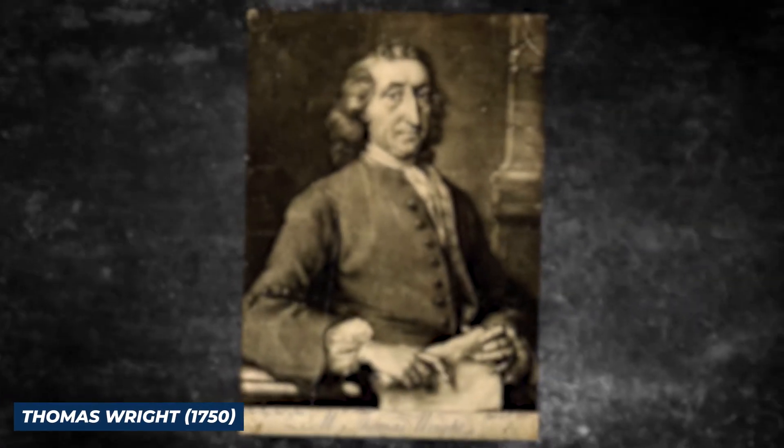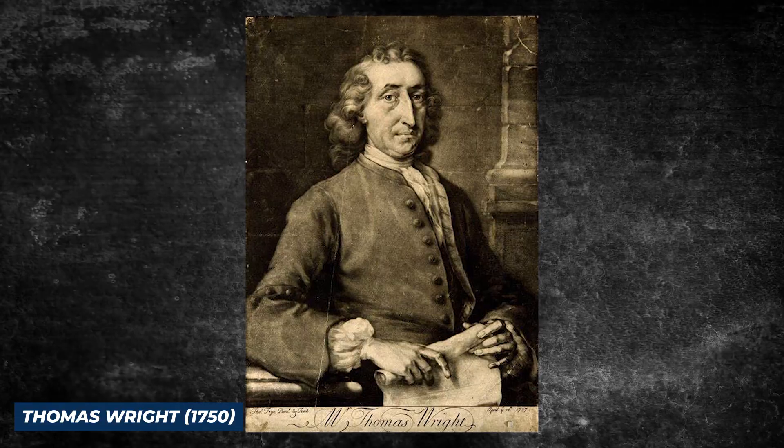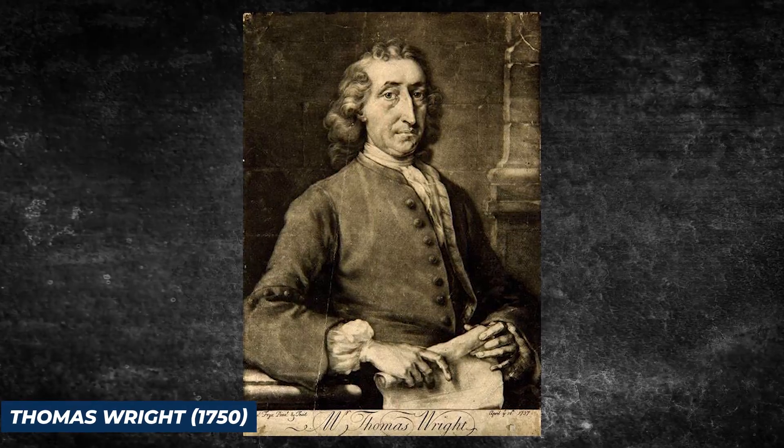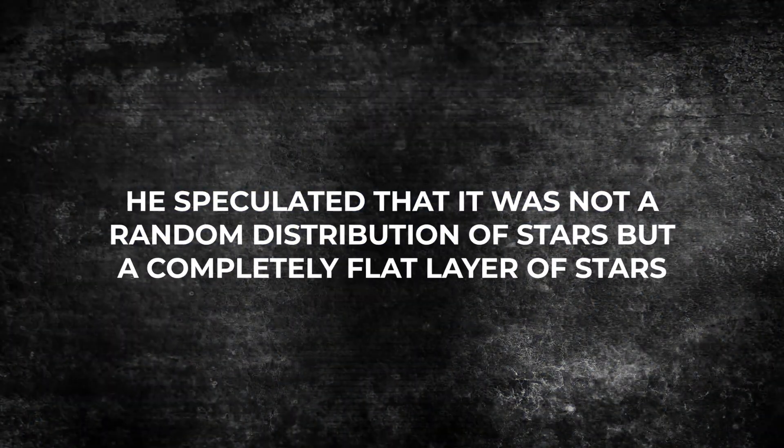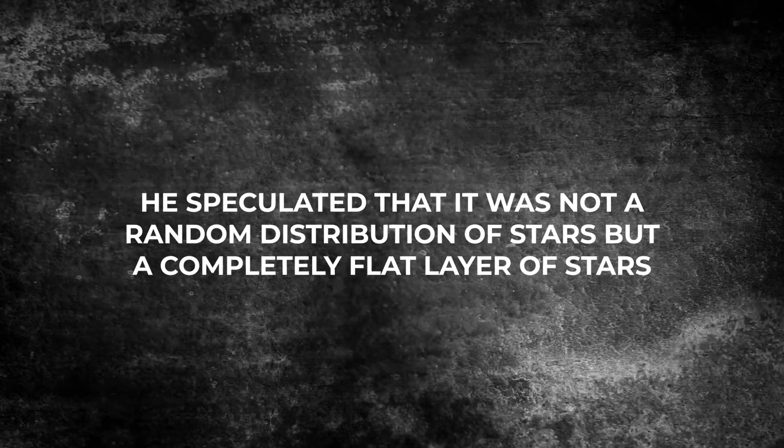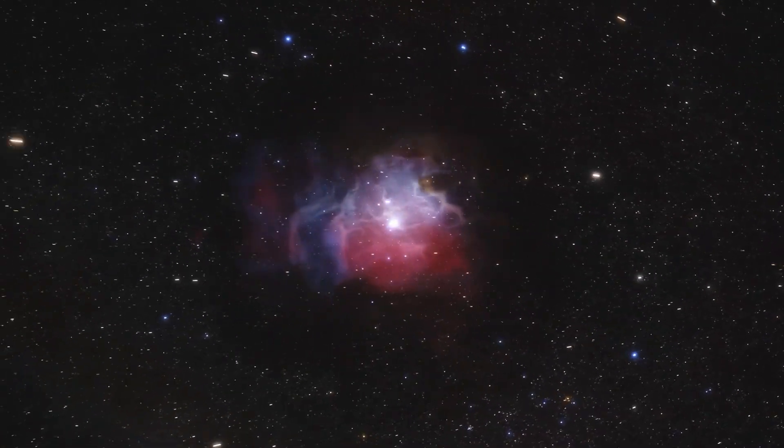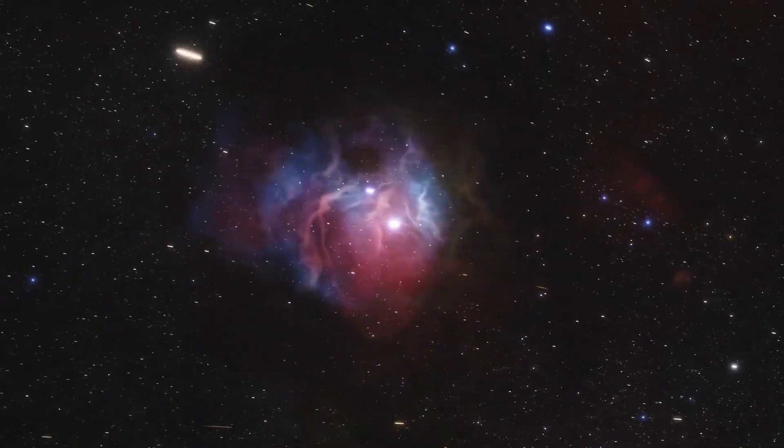In 1750, English astronomer Thomas Wright proposed a new hypothesis about the structure of the Milky Way. He speculated that it was not a random distribution of stars but a completely flat layer of stars. He also suggested that a portion of this vast structure was our own solar system.